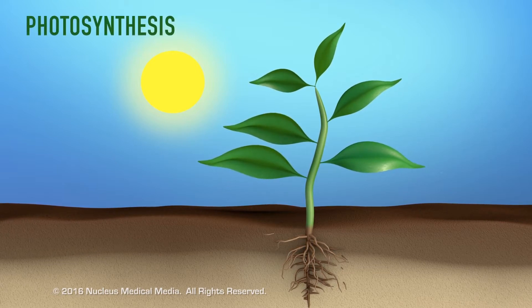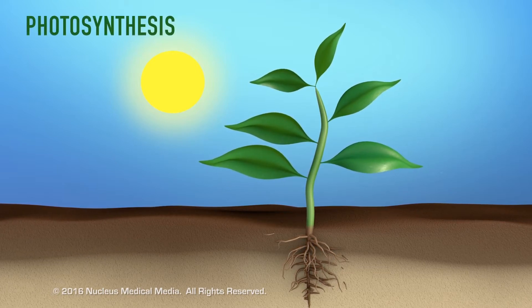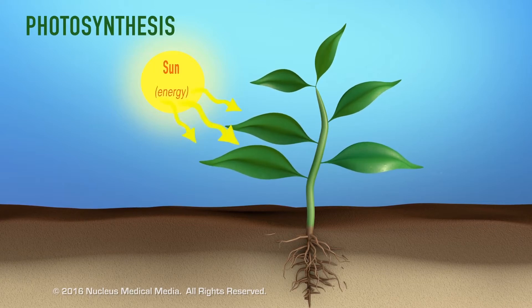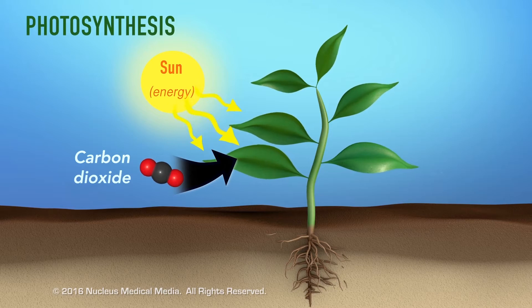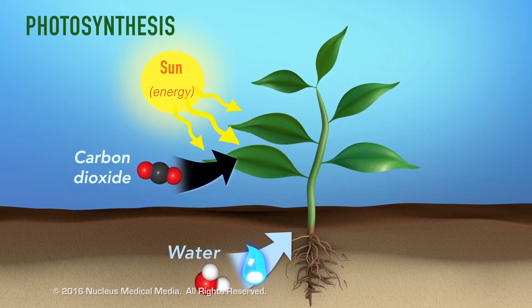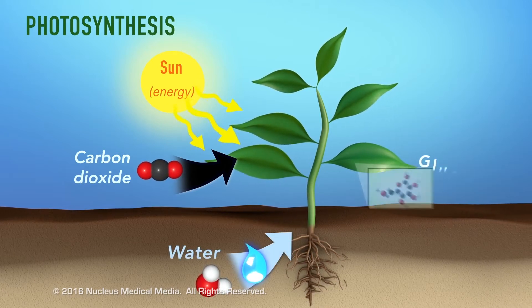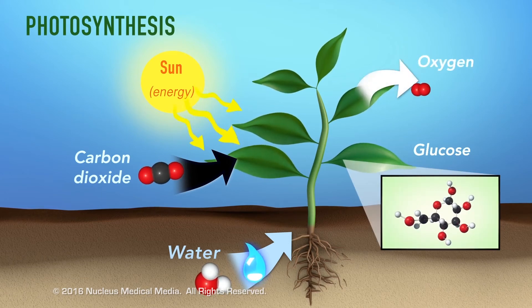Photosynthesis is a chemical reaction in which plants make food by using the sun's energy to combine carbon dioxide from the air and water from the soil into a sugar called glucose and oxygen.